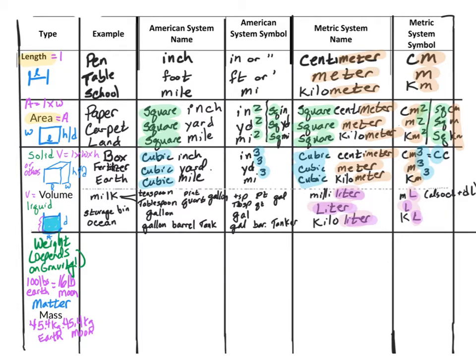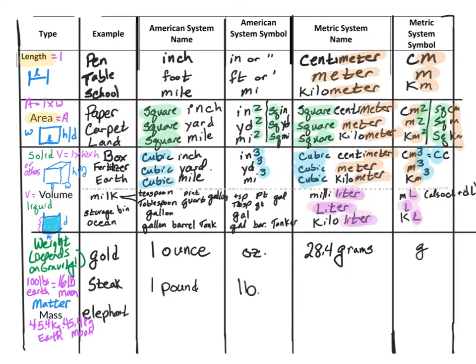So a few examples for the American system would be gold, a steak, or an elephant. If I were shopping for some gold, in the American system, I might buy one ounce of gold, abbreviated OZ. Whereas in the metric system, I would have to buy about 28.4 grams of gold, abbreviated G. Grams is our base unit. If I went shopping for a steak, I might buy one that was one pound, abbreviated LB. Or in the metric system, I would buy about a half kilogram of that same steak, abbreviated KG.